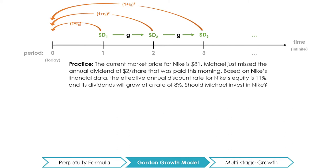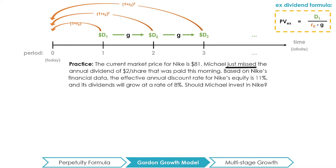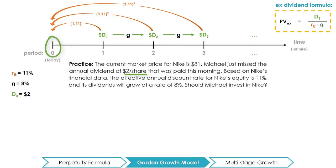Let's summarize the information we have. Right off the bat, we know that we will be applying the ex-dividend version of the Gordon Growth Model, as Michael just missed the annual dividend that was paid this morning, and so he is interested in the cash flow starting with next year's dividend. The problem clearly gives us RE equal to 11% and G equal to 8%. We also know that a dividend of $2 per share was paid today, but in order to apply the Gordon Growth Model, we need to know the dividend that is paid next year. This is not a problem, as we know that the dividend paid next year will be 8% greater than the dividend that was just paid today. Thus, D1 is equal to $2.16.